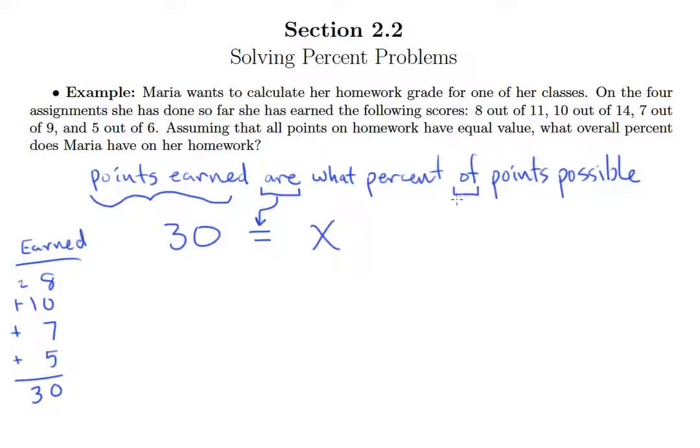Of course 'of' still means times, and so now we need points possible. So we had 11 points possible on the first one, 14 possible on the second, 9 possible on the third, and 6 possible on the fourth. So we add all these up, looks like we get 40.